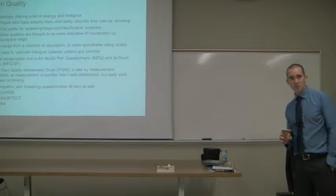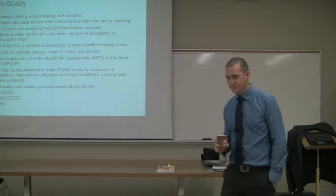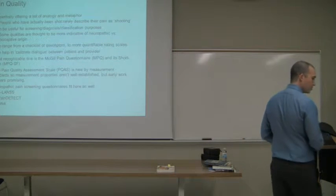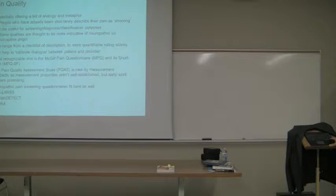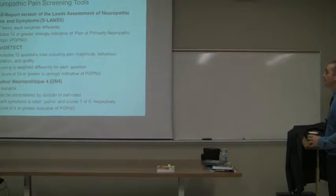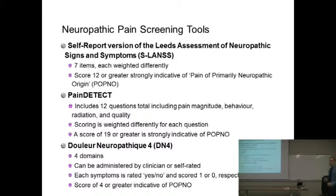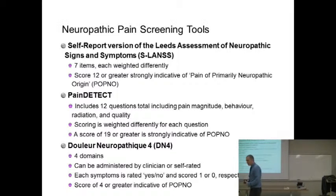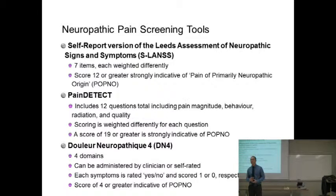The Neuropathic Pain Screening Questionnaires are in your package as well. The next one is the SLANs, which is the second routine tool in my package. SLANs stands for the Self-Report version of the Leeds Assessment of Neuropathic Signs and Symptoms, which we mercifully shortened to SLANs.